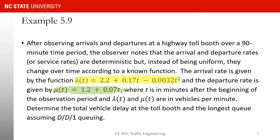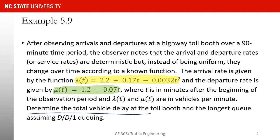Here, both the arrival rate and departure rate are known functions of t — they're not fixed. So we have lambda(t) and mu(t) as functions of t. The question asks us to determine the total vehicle delay and the longest queue, assuming a DD1 queuing system. I'd ask you to pause the video here — based on what you've seen in the previous class, you may be able to solve this problem.